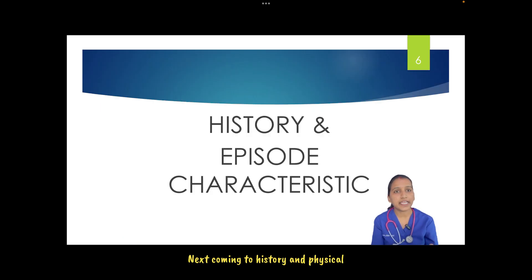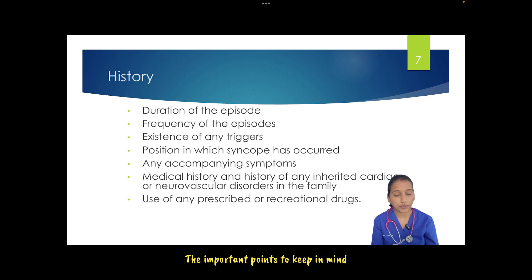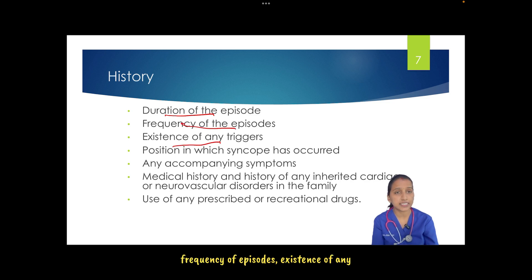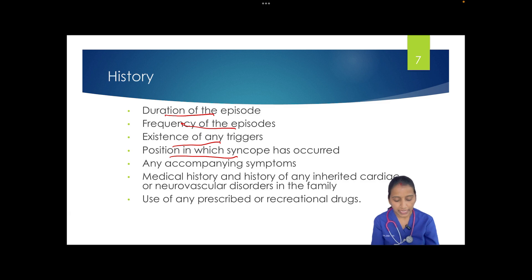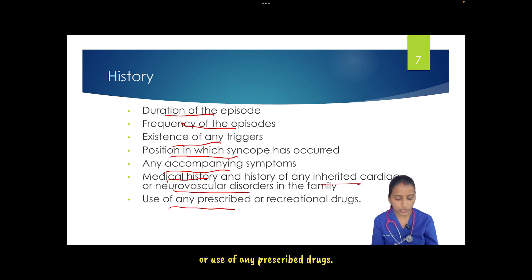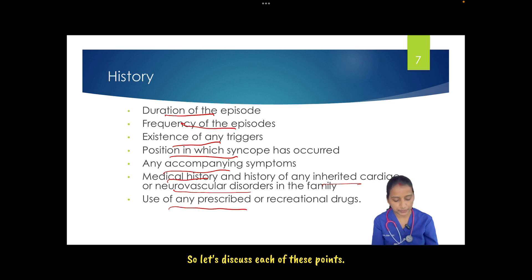Coming to history and physical characteristics — how do we identify each type? The important points to keep in mind while assessing a patient with syncope are: duration of episodes, frequency of episodes, existence of any triggers, position in which syncope occurred, any accompanying symptoms, patient's medical history, any inherited cardiac or neurovascular disorders in the family, and use of any prescribed drugs.